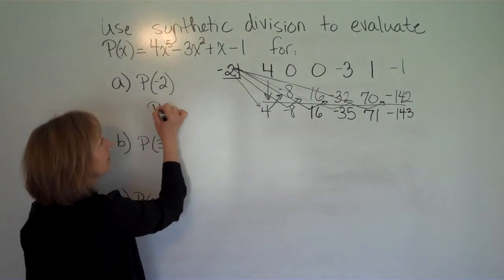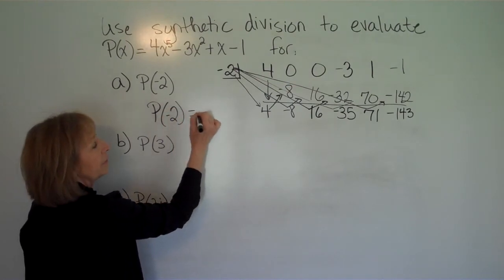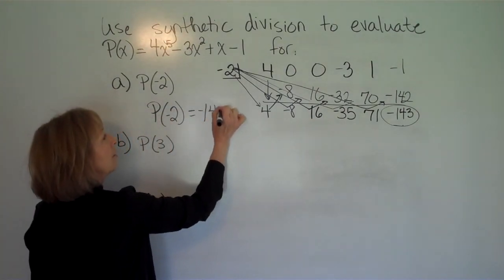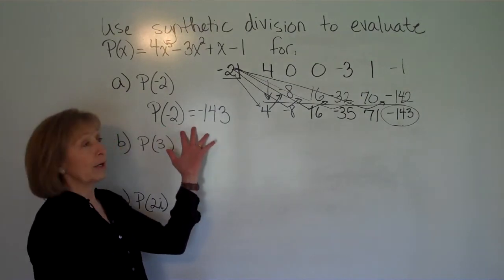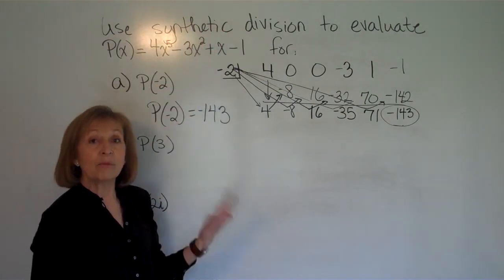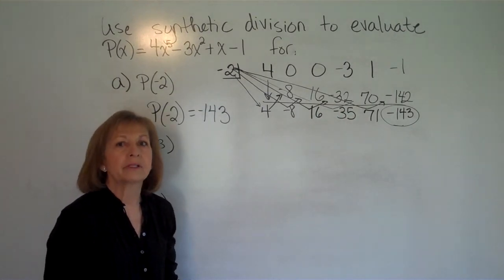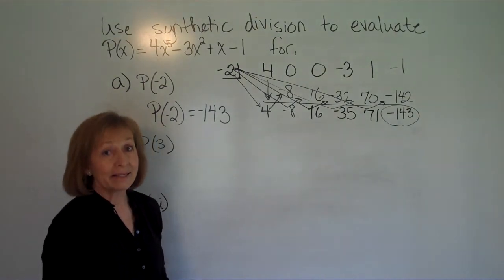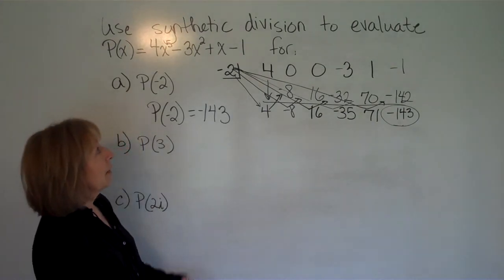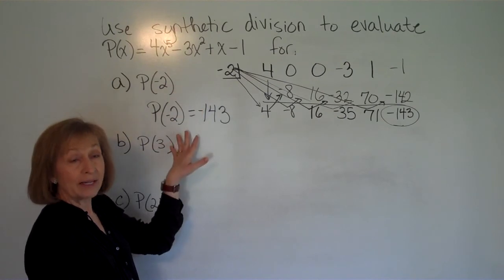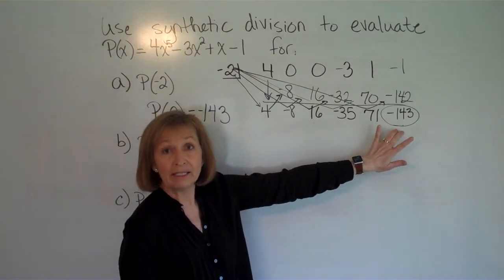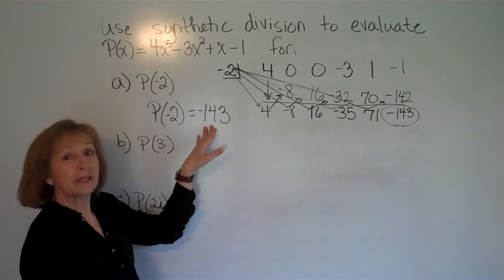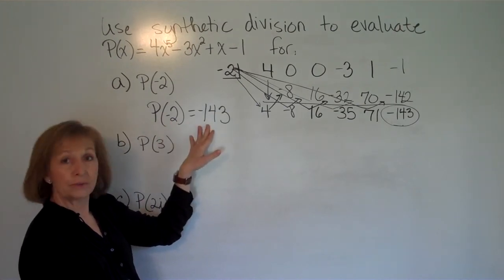So P of negative 2 comes out to be the value of the remainder: negative 143. Another thing you want to make sure is that you state what your answer is from what they asked you to do in the question. Some questions want you to write the quotient times the divisor plus the remainder form, or state the quotient and the remainder. This one asked me to evaluate the polynomial, so I want to state that P of negative 2 is negative 143.